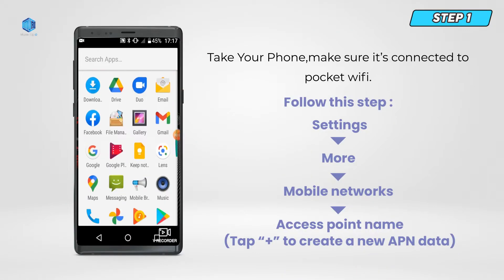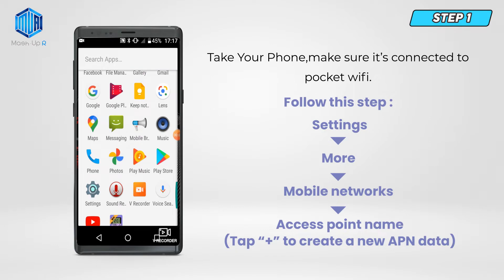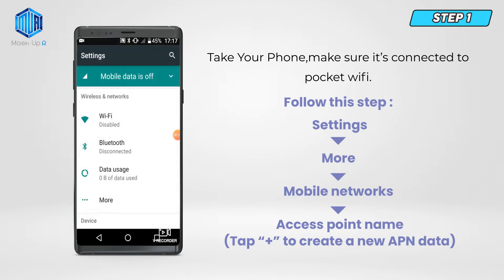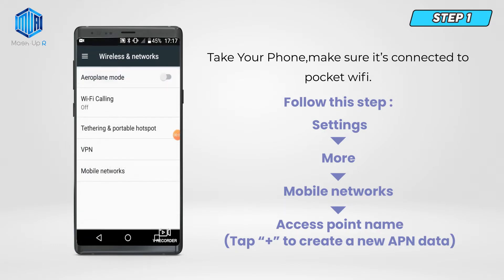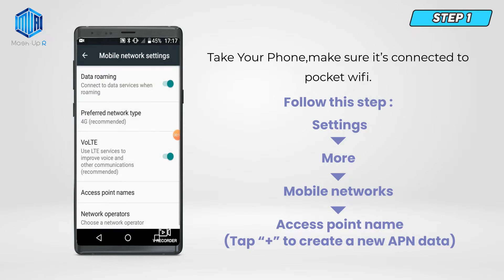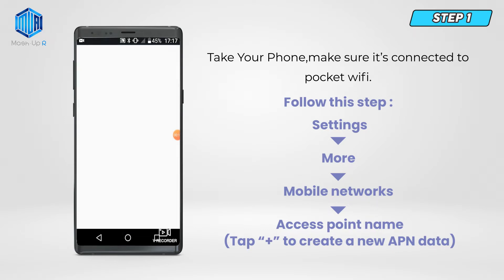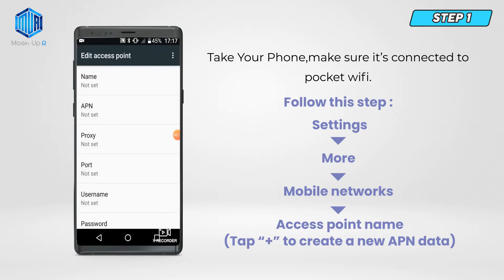Step 1. Take your phone and make sure it's connected to Pocket Wi-Fi, then go to Settings, More, Mobile Networks. Tap Access Point Name, and tap the plus sign to create a new APN.